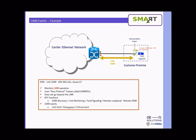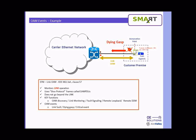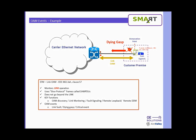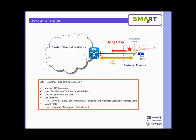Graphically, here is how Smart SFP works. For the EFM Link OAM case, once the Smart SFP is plugged in, OAM can be discovered automatically and it monitors the link. Also, once you lose power on the customer equipment side, you get a signal back into the network called Dying Gasp. This can be differentiated from a fiber cut — it indicates a power failure in the equipment side.